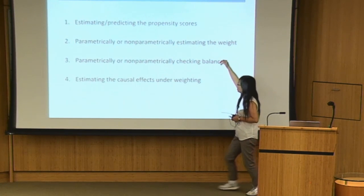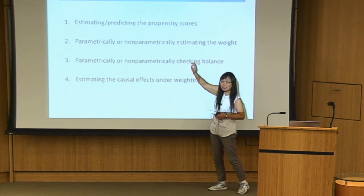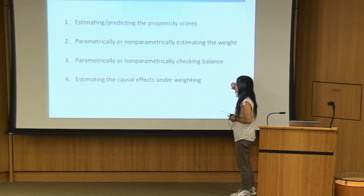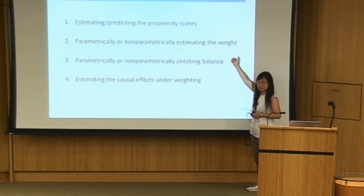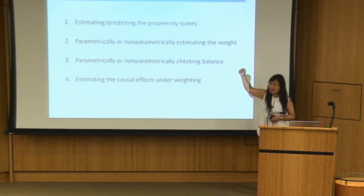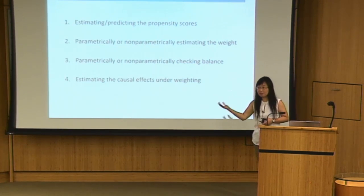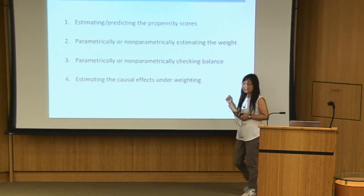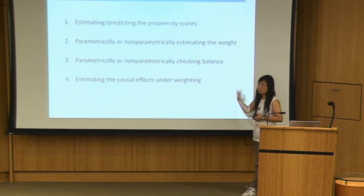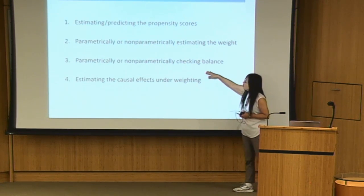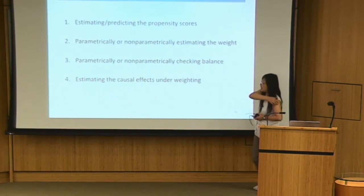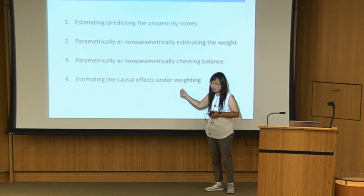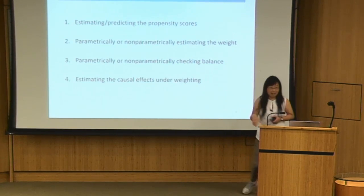Step two: once you have these propensity scores, you can estimate a weight either parametrically, using the propensity scores directly, or non-parametrically. Then we check whether the propensity score models are adequate in adjusting for selection bias associated with the observed covariates. If some covariates are not well-handled, we go back and modify the propensity score model — this step is called checking balance. Finally, if satisfied, we do the weighted mean contrasts to estimate causal effects.